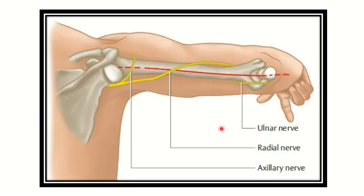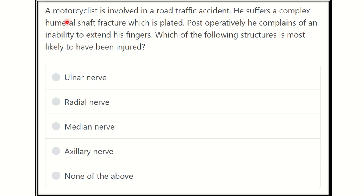Welcome to another question and answer session. A motorcyclist is involved in a road traffic accident and suffers a complex humeral shaft fracture. Post-operatively, he complains of an inability to extend his fingers. Which of the following structures is most likely to have been damaged? The options are the ulnar nerve, radial nerve, median nerve, axillary nerve, and none of the above.